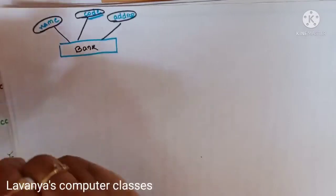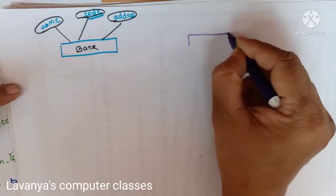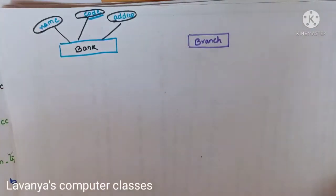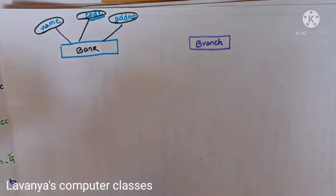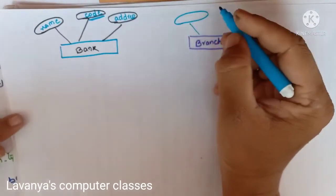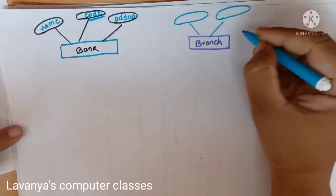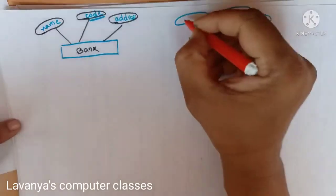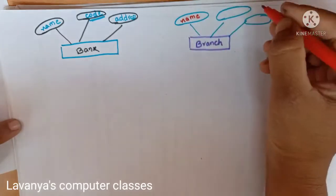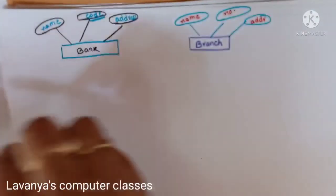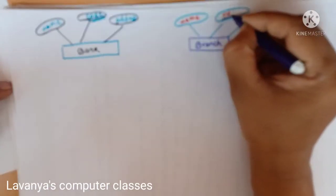Banks have branches, so one more entity set — branch. The branch entity set has attributes: branch number, branch name, and address. Branch number is the primary key, so it is underlined.